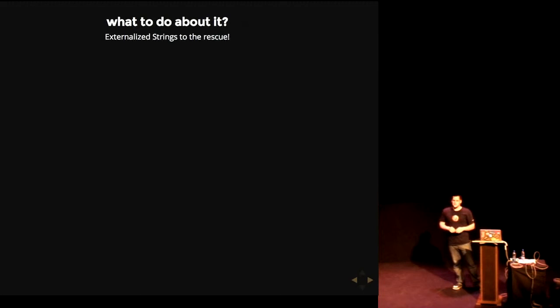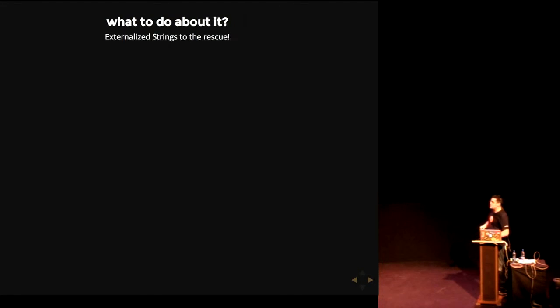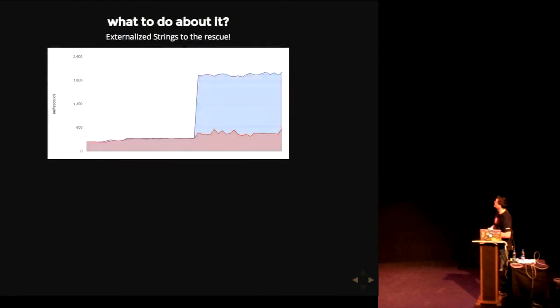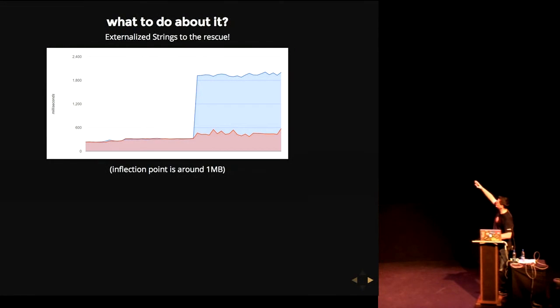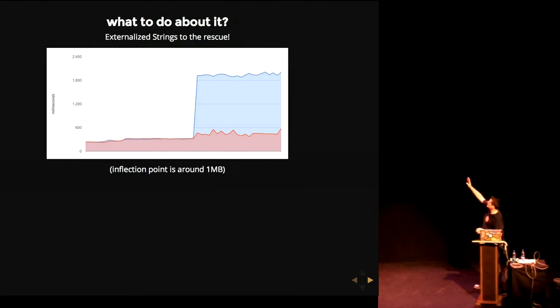This is another reason I hate UTF-8: you cannot treat UTF-8 as an externalized string — you always have to copy it into the V8 heap. So what happens to that graph when we use externalized strings? We can see performance is still variant, but it's treated much, much better. The inflection point is right around 1 meg, which is larger than any network packet we'll be receiving. We were able to level that off, and I'm really happy about that.